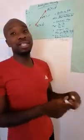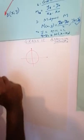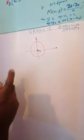Today we're going to talk about the circle. We have a circle here on the Cartesian plane. This circle is centered at the origin. The center coordinates are zero, zero. This is the x-axis and this is the y-axis.